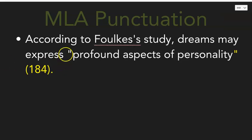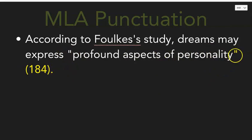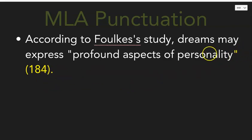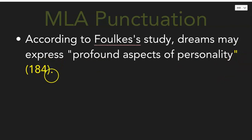The rule is that the period goes outside of the in-text citation — after the last parenthesis, your punctuation goes after the last word in the in-text citation. The formula is: quotation, in-text citation, then sentence punctuation — in this case, a period.